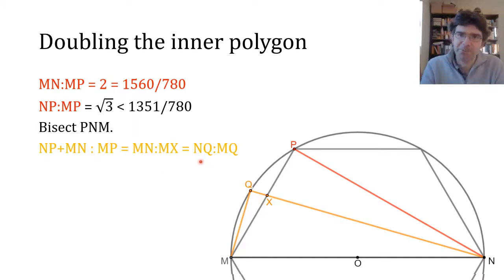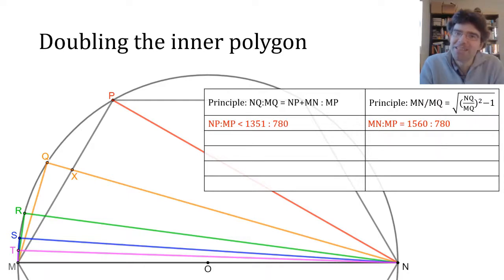If you know Ptolemy's theorem then you could avoid some of that argumentation and just get it directly. Now again once we've got that ratio we can then express MN over MQ quite simply in terms of NQ over MQ using Pythagoras theorem. And again we use those two ideas as the basis of an iterative process. So we can get NQ to MQ is less than 2911 to 780, the sum again. MN to MQ we're going to need to extract a square root. It's just less than 3013 and three quarters to 780.